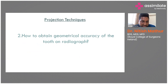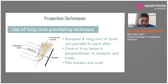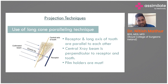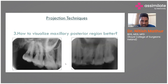The next question is how to obtain geometrical accuracy of the tooth on a radiograph — how to take exact X-rays with no shortening and no elongation. The answer is well established: we need the long cone paralleling technique, in which the tooth and the receptor are parallel to each other and the central X-ray beam is perpendicular to both. To achieve this technique, we need film holders.